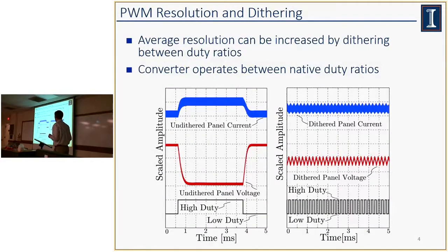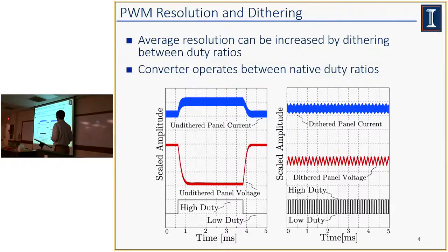So what can we do about this coarse duty ratio resolution? One approach that's commonly used is dithering. Dithering allows us to operate between the extreme points at which our native PWM duty ratio resolutions would place us. At high duty, panel voltage falls and panel current rises; at low duty, panel voltage rises and current falls. But if we quickly dither back and forth between these two duty ratios, the current and voltage never reach the native steady state values — we can adjust this ripple between the limits imposed by a coarse duty ratio resolution.